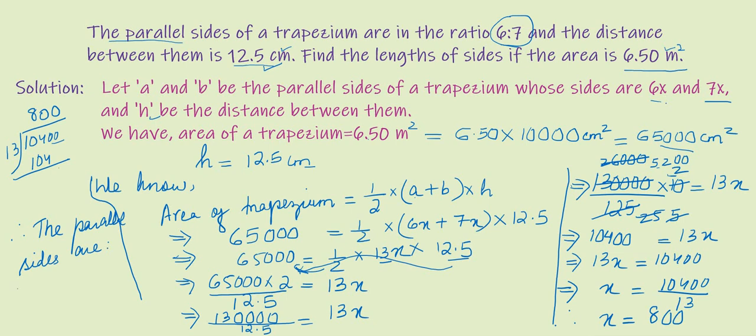The parallel sides are 6x and 7x. So 6x equals 6 multiplied by 800, which equals 4800 centimeter. And 7x equals 7 multiplied by 800, which equals 5600 centimeter.